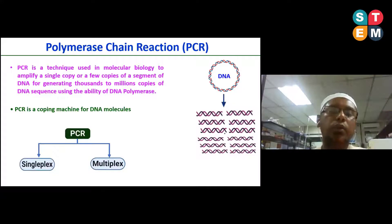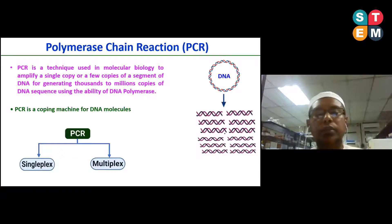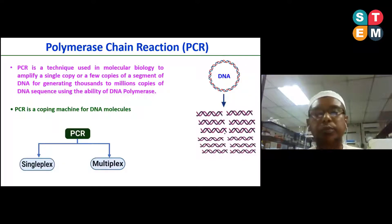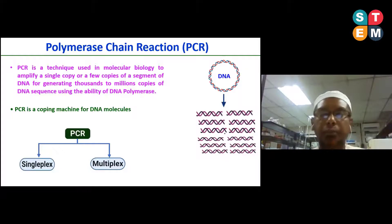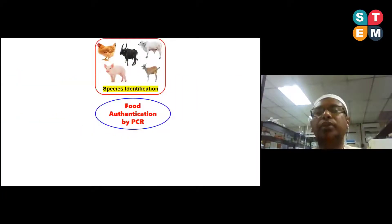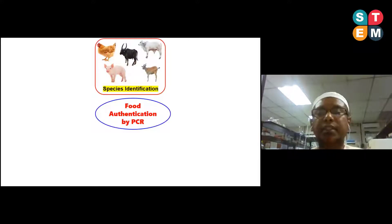There are two main types of PCR based on the target: simplex and multiplex. Single-plex PCR means it can detect only a single species. Multiplex PCR means it is able to detect multiple species in a single reaction. Now I am going to present end-point PCR, or conventional PCR, and how we can detect species in food products using PCR techniques.